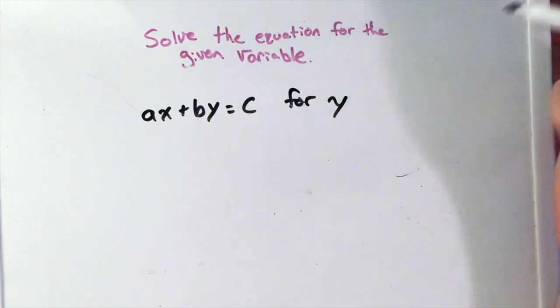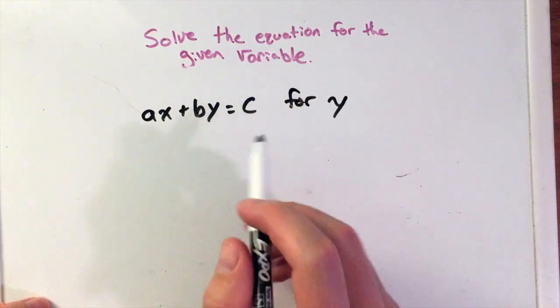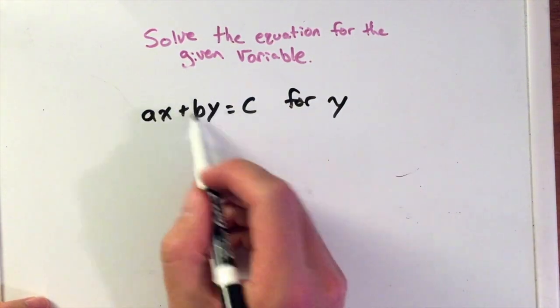The same rules still apply like we've done before and we want to isolate y by itself. We see the addition separating the two main chunks here.